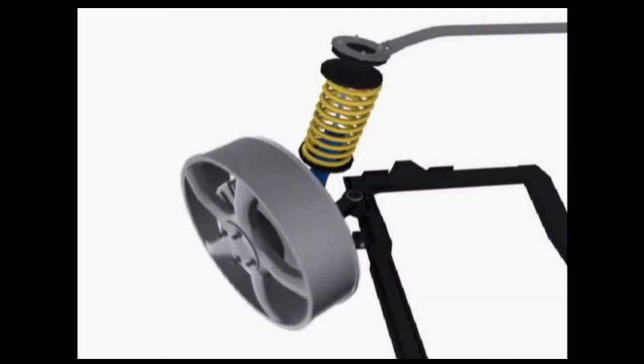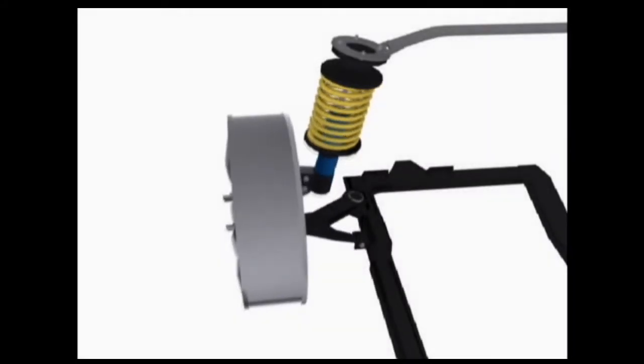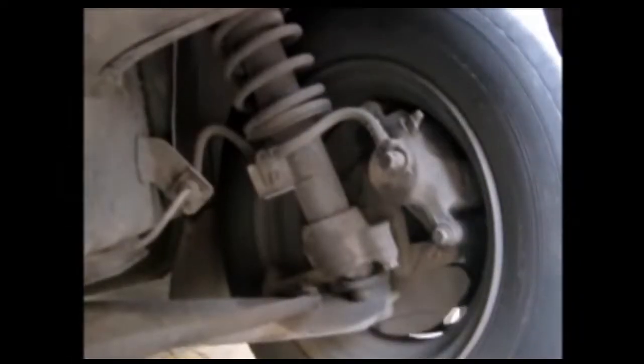This animation shows McPherson strut in action. On a car we see the ball joint at the end of the control arm and the strut going up and down to ride with the bumps.